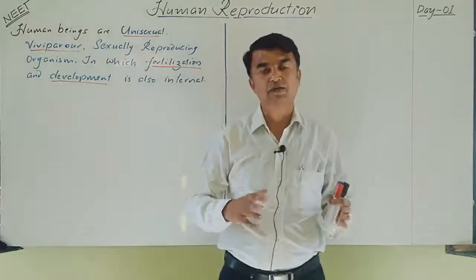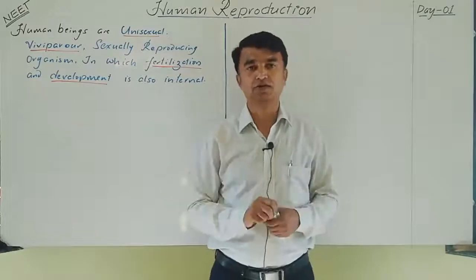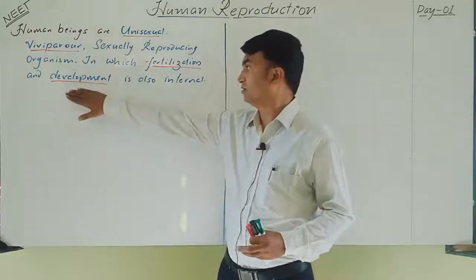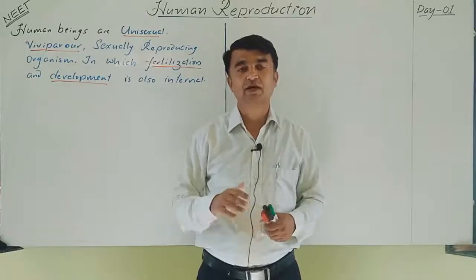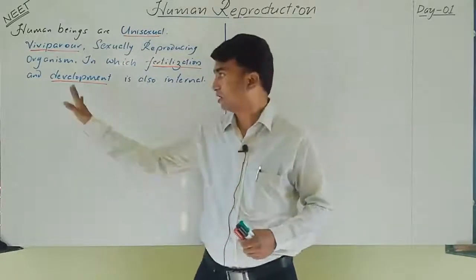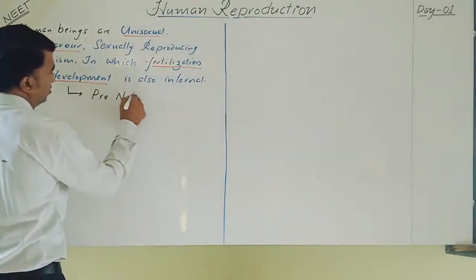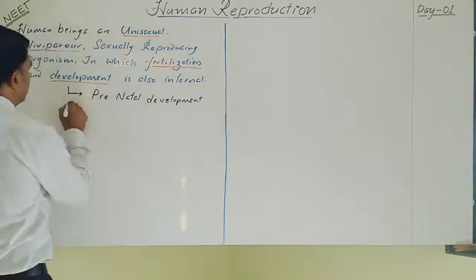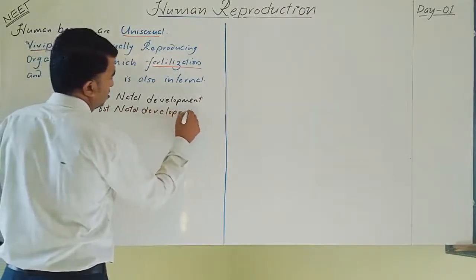Development includes all events from after fertilization — from the zygote, cleavage, implantation, and gradual embryonic development, up to and including changes after birth. Development can be classified into two types: prenatal development, which takes place within the uterus, and postnatal development, which takes place after birth.